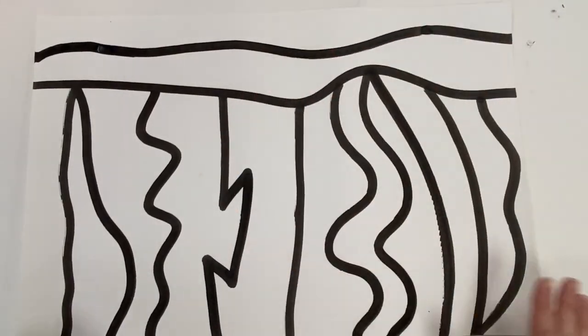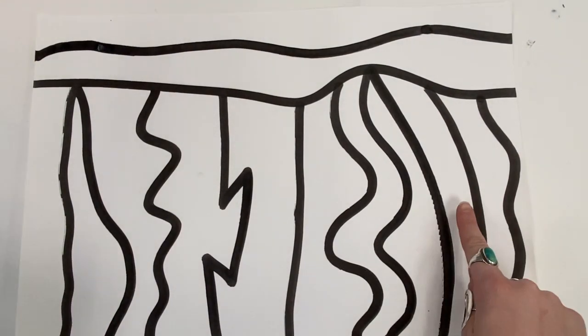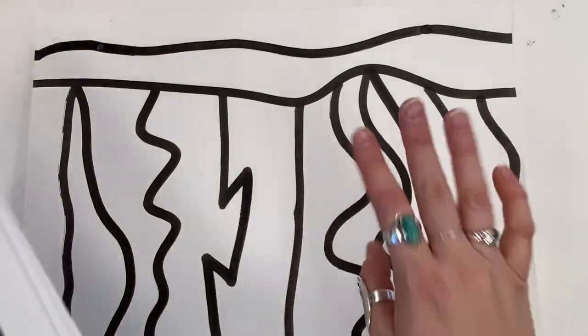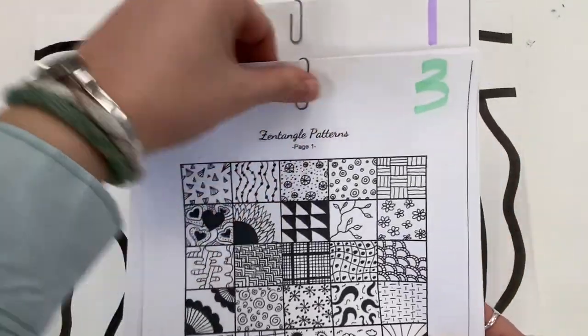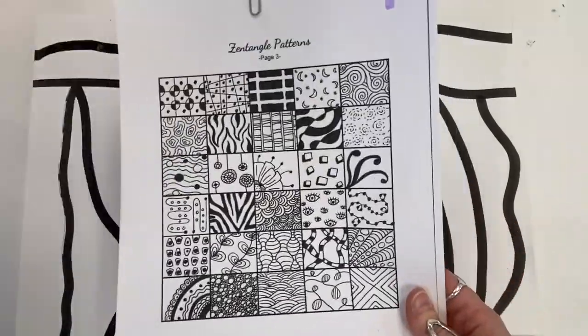Alright, so once we have this drawn with our paint marker, we're going to add inside of each one of these sections a different pattern. We're going to be using some Zentangle patterns which we've done in the past, and I have lots of examples.